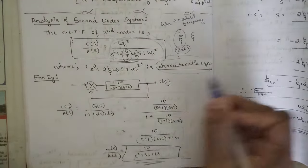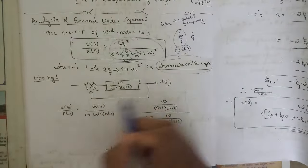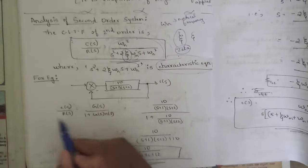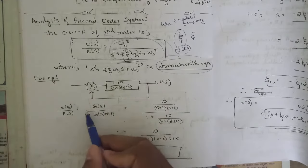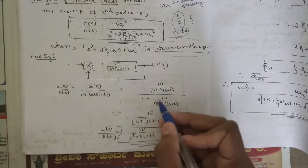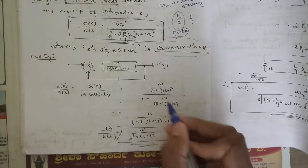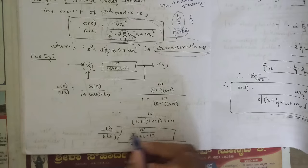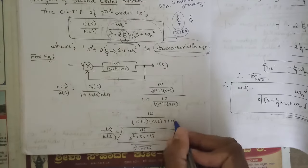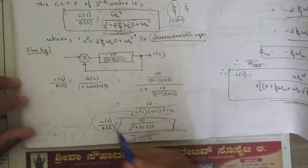For example, consider a simple block diagram with one gain and a unity feedback path. The closed loop transfer function C(s)/R(s) = G(s) / (1 + G(s)H(s)). That is 10 / [(s+1)(s+2)] divided by 1 + 10/[(s+1)(s+2)]. After simplification we get 10 / [(s+1)(s+2) + 10], which gives us 10 / (s² + 3s + 12).